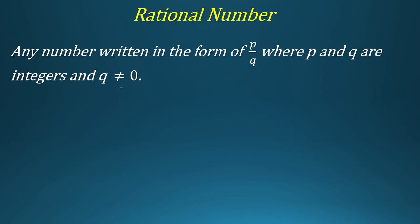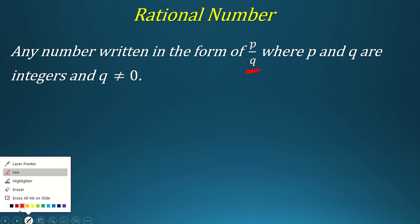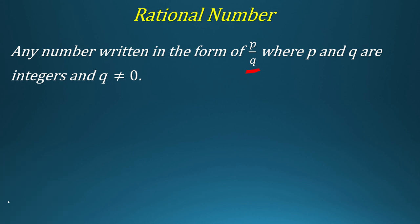What is a rational number? A rational number is a number which can be written in the form of P over Q. You must understand this carefully because this lesson has a lot of confusions and misconceptions. P and Q are integers, and Q is not equal to 0, meaning the denominator cannot be equal to 0.